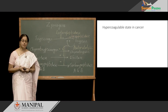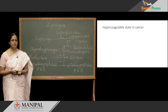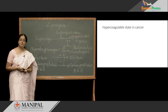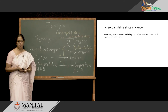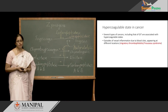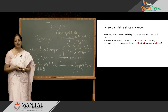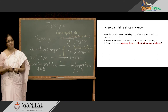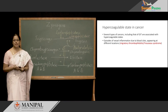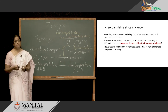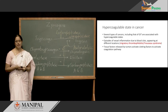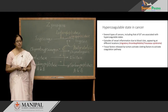Many types of cancer are associated with a hypercoagulable state, also known as migratory thrombophlebitis or Trousseau syndrome. Clot formation occurs in the superficial vessels and these clots appear at different places at different times — hence migratory thrombophlebitis. Cancerous tissues release certain tissue factors which activate the extrinsic pathway of blood coagulation, thereby causing clot formation.